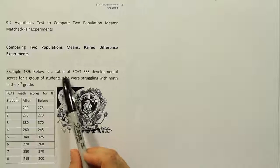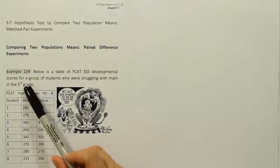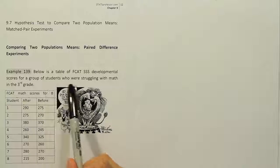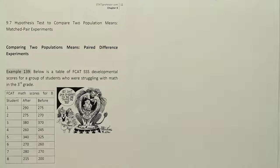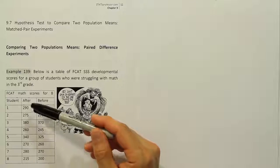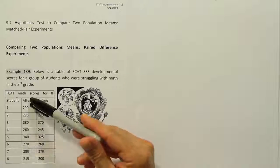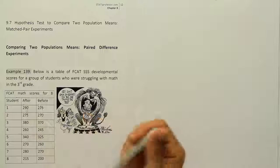Example 139. Below is a table of FCAT SSS developmental scores for a group of students who are struggling with math in the third grade. This data involves sets of test results for students who were given some test prep. First they took the test without any prep, then they had some test prep given to them and took the test again to see how they scored. So it's before and after results.